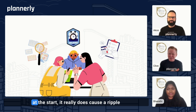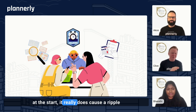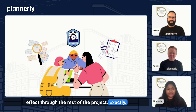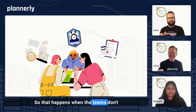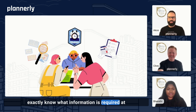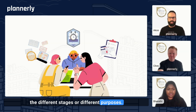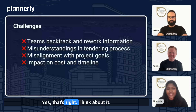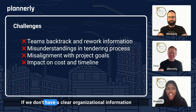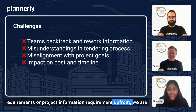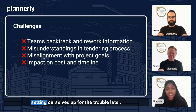When you don't have the right information at the start, it really does cause a ripple effect through the rest of the project. That happens when teams don't exactly know what information is required at the different stages or for different purposes. If we don't have clear organizational information requirements or project information requirements up front, we are setting ourselves up for trouble later.